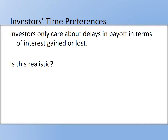Time preference is one of the major topics in behavioral economics. Prospect theory is one of them, and time preference is typically the second. To use a financial motivation, investors only care about delays in payoffs in terms of interest gained or not. In any typical intertemporal economics model, investors are trading off between future and today with a certain discount factor — or discount rate, depending on how your formula is written.